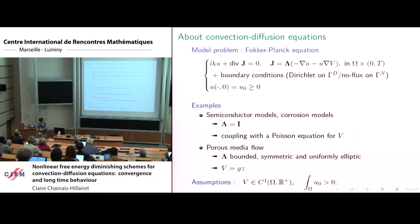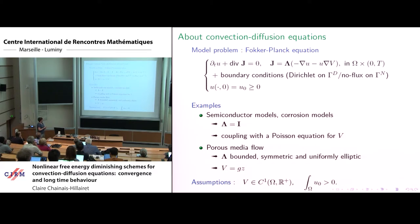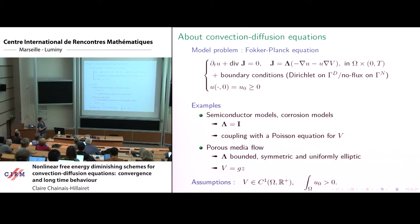This kind of equations arises in many different frameworks. One example is for semiconductor models or corrosion models. In this case, lambda is just an identity matrix, and in general we consider drift-diffusion systems of equations — two convection-diffusion equations coupled with a Poisson equation for the potential.